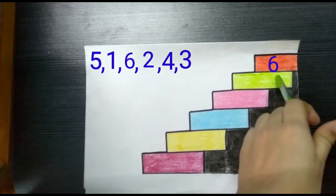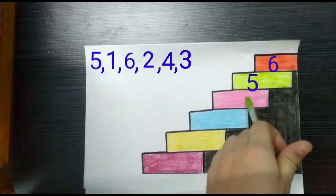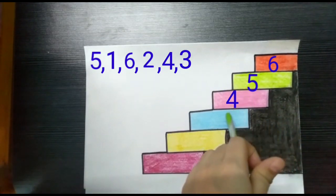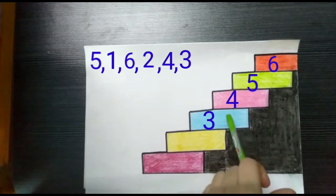That's right. The next number, the green step, is number 5. Very good. Then comes the pink step, which is number 4. Followed by the blue step, which is number 3.